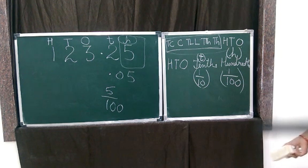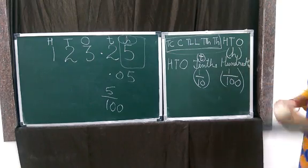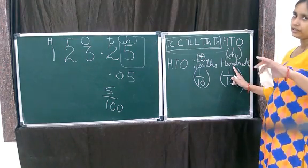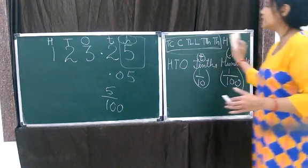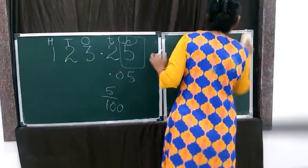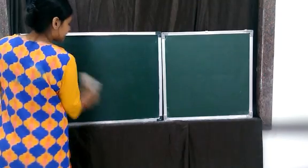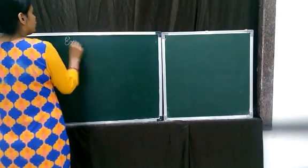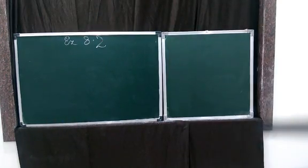So, this is the new place value - actually not new because we have done this in the previous exercise also, but conceptually we are discussing it now. So, after tenths, we have another place value which is hundredths. And after hundredths, we have one more place value which we are going to discuss later. Depending on this new term, there are certain questions - there is a new exercise in our maths book which we are going to start now. That is exercise 8.2.